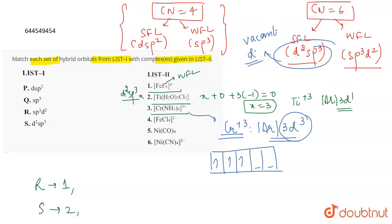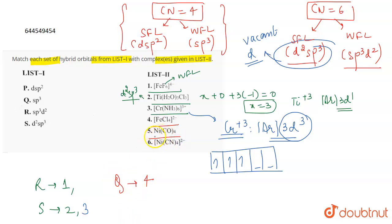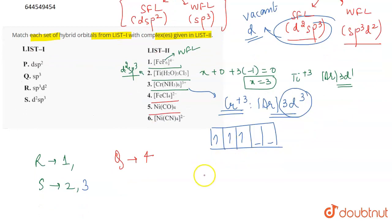Since a vacant d orbital is available, S matches with both 2 and 3. The next complex is [FeCl₄]²⁻. Cl is a weak field ligand and this is a coordination number four complex, so with a weak field ligand and coordination number four, the hybridization is sp³. This means Q matches with 4.